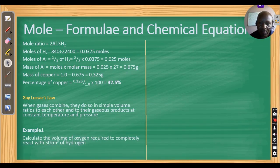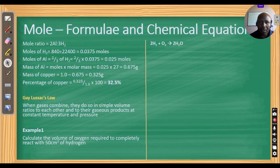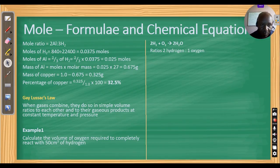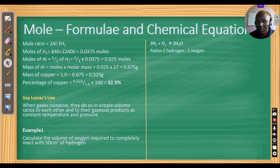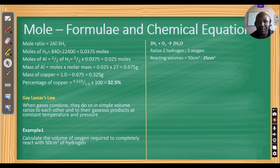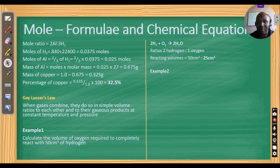Example 1: calculate the volume of oxygen required to completely react with 50 cm³ of hydrogen gas. The equation is 2H₂ + O₂ → 2H₂O. The ratio is 2 hydrogen to 1 oxygen. So if 50 cm³ of hydrogen is used, the volume of oxygen required is 25 cm³.